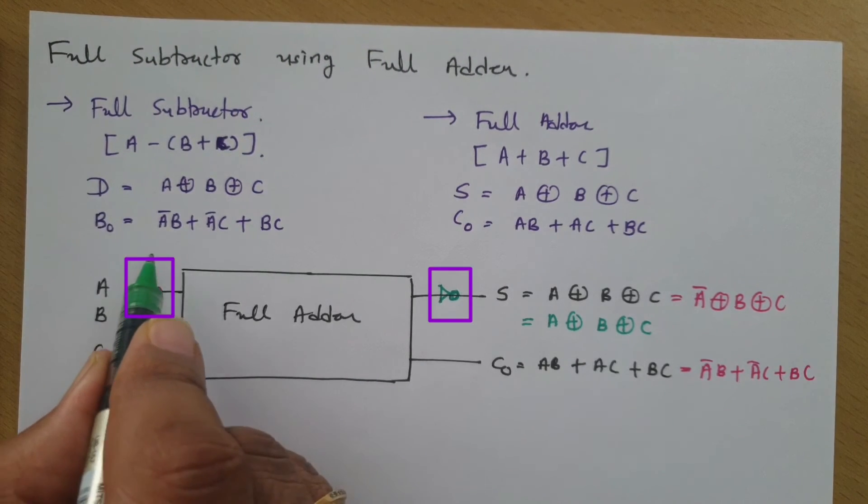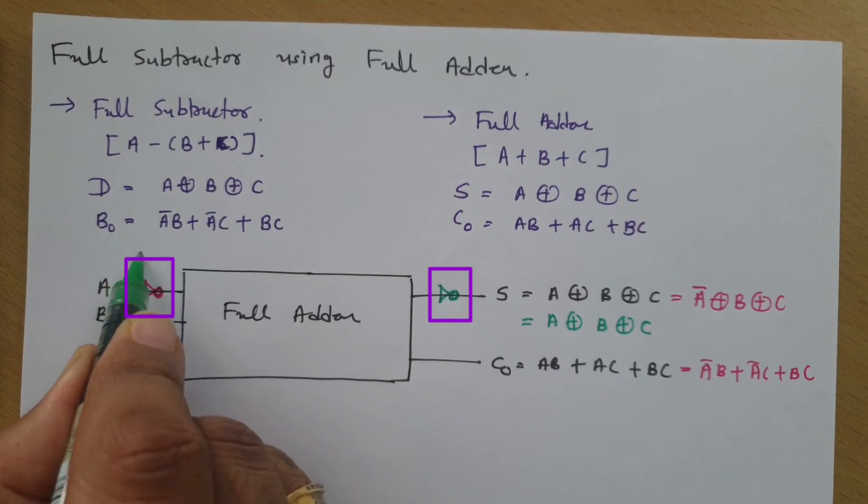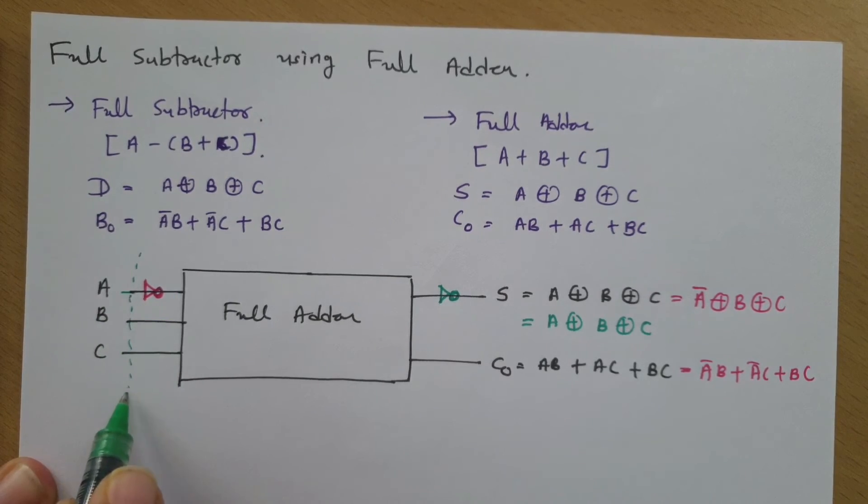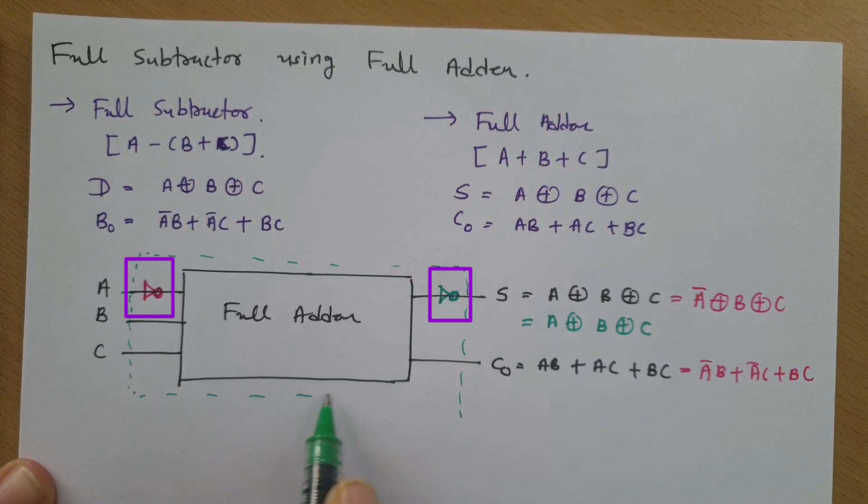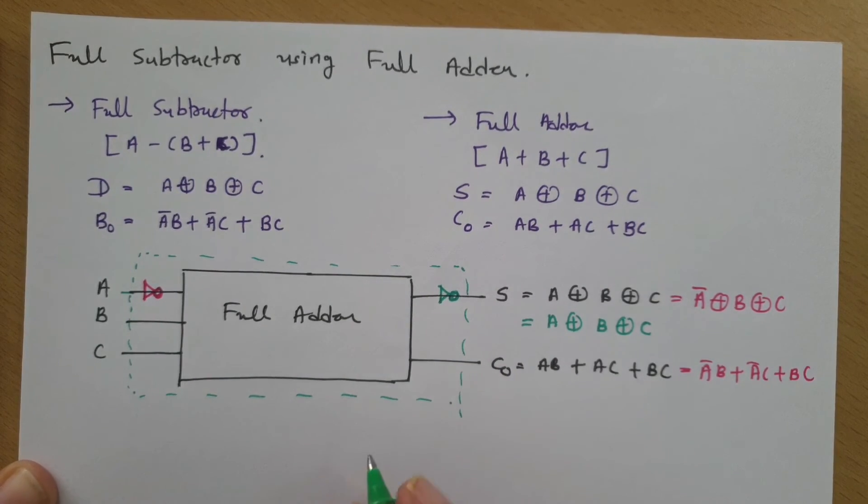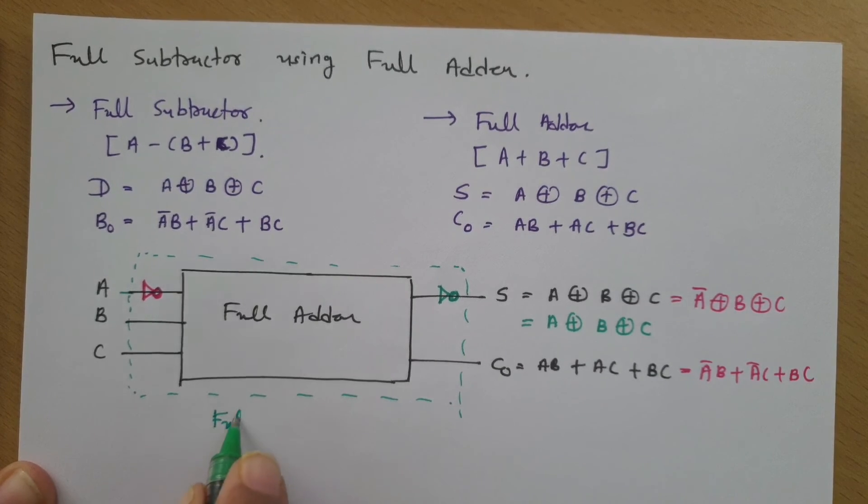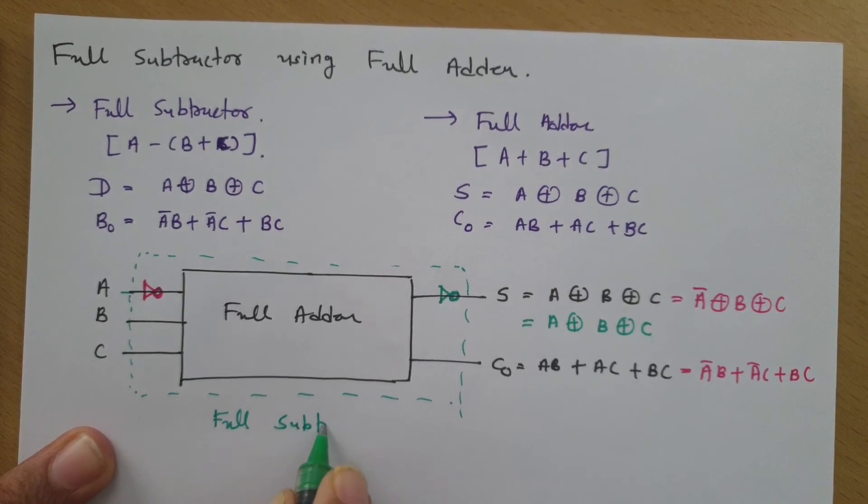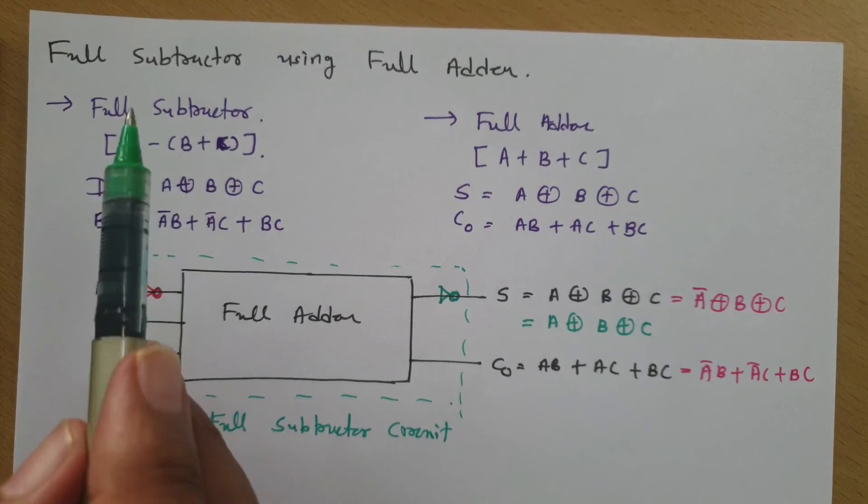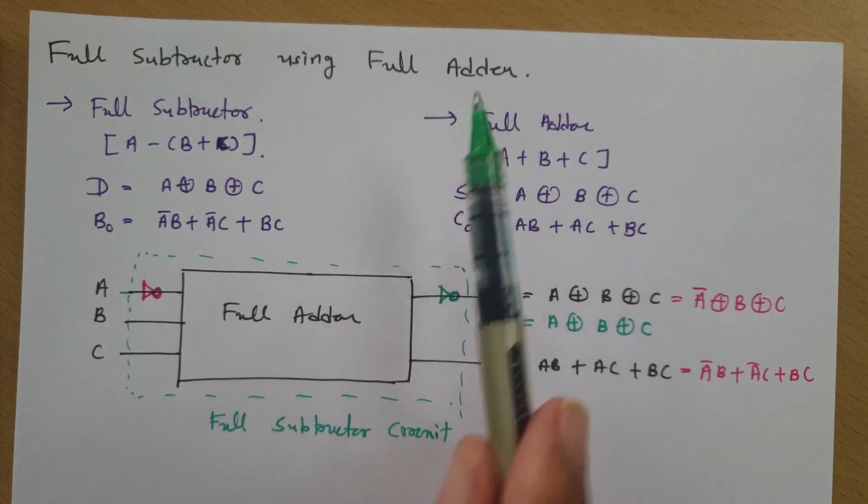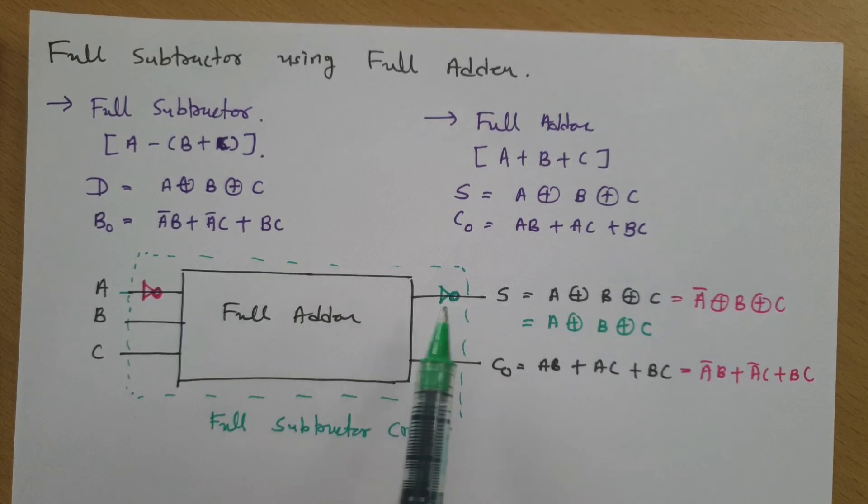So now if you observe, if you connect these two NOT gates at input A and at output of sum, then this circuit is functioning like full subtractor circuit. So one should know how to translate full subtractor from full adder.